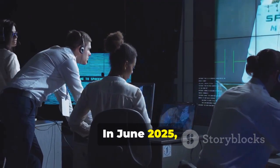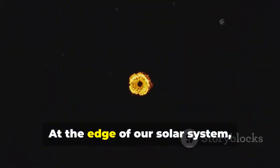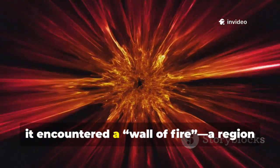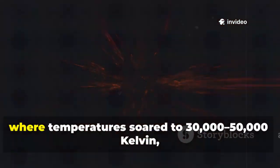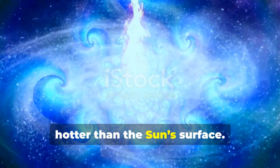In June 2025, Voyager 1 sent back data that stunned scientists. At the edge of our solar system, it encountered a wall of fire, a region where temperatures soared to 30,000-50,000 Kelvin, hotter than the sun's surface.